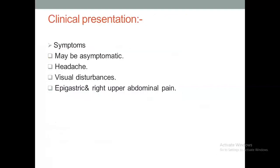Women with preeclampsia may be asymptomatic and discovered accidentally. They may present with headache, blurring of vision and visual disturbances, epigastric pain, and right hypochondrial pain. If any woman presents with these symptoms, always take the opportunity to measure her blood pressure and rule out hypertension during pregnancy.